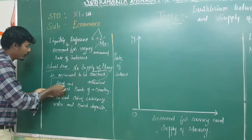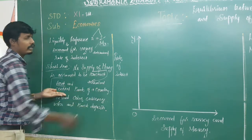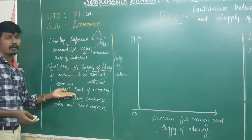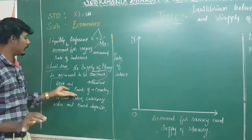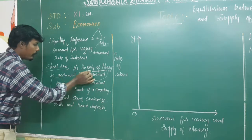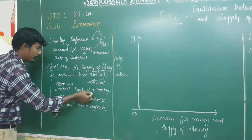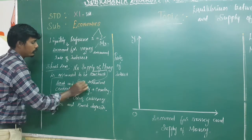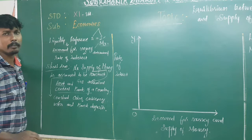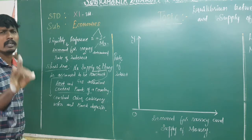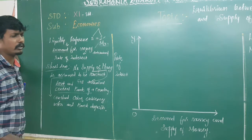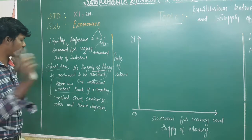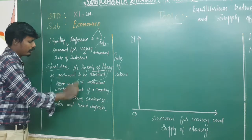In the short term, the supply of money is assigned as a constant. Why is it constant? Because money supply is determined by the Government of India and the central bank of the country. The central bank of India is the Reserve Bank of India. The RBI is the first bank of the country and has monopoly power over money supply.